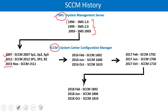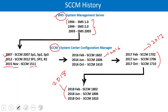They released SCCM 2007, then 2012, then 1511. From 2015 November onwards the versioning became year and month. They now release SCCM three times per year — these are the versions released in 2016, 2017, and 2018.